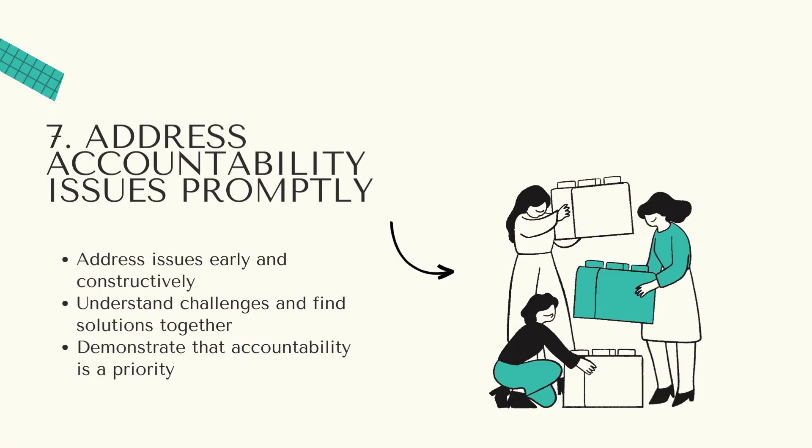And last but not least, address accountability issues promptly. Have open conversations with team members who are struggling to meet expectations. Understand the reasons behind their challenges and work together to find solutions. By addressing issues early, you prevent small problems from escalating and demonstrate that accountability is a priority.